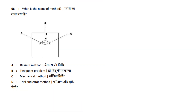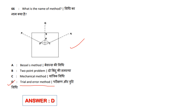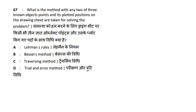What is the name of the method? What is the method with any two of three non-object points, where the plotted positions on the drawing sheet are taken for solving the problem? Options: Lehmann's Ruler, Basel Method, Traversing Method, Trial and Error Method. Answer option B — Basel Method. The Basel method uses any two of three well-defined points to solve the 2-point problem.